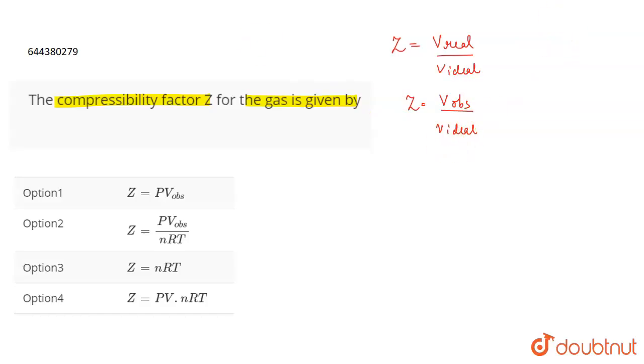Now, for ideal volume, you can find it out. How? You have an ideal gas equation which is PV ideal is equal to nRT. This is the formula for an ideal equation. So here we are just replacing V by V ideal because we are using the ideal gas equation. So from here, we will be having V ideal is equal to nRT by P.